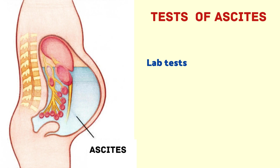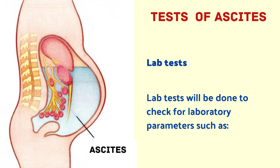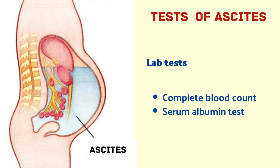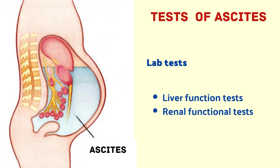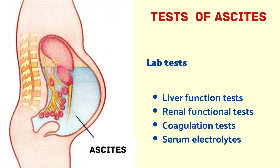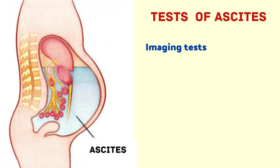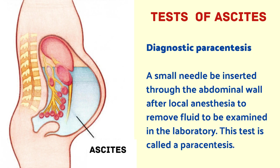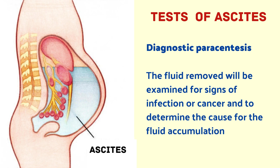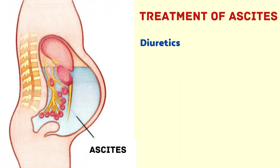Now let us discuss the tests done for ascites. Lab tests check parameters such as complete blood count, serum albumin, bacterial culture test by bedside inoculation, urinalysis, liver function test, renal function test, coagulation test, and serum electrolytes. Imaging tests include chest X-ray, ultrasound, CT scan, and MRI scan. Diagnostic paracentesis involves inserting a small needle through the abdominal wall after local anesthesia to remove fluid for laboratory examination, to check for signs of infection or cancer and determine the cause of fluid accumulation.